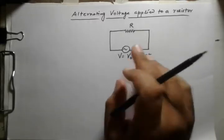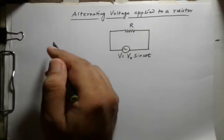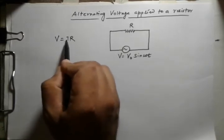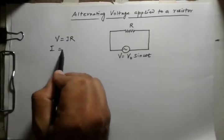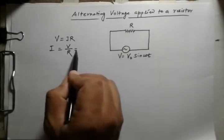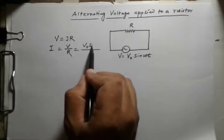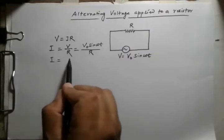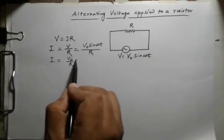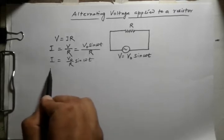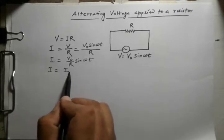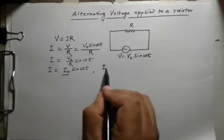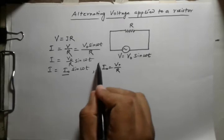From this AC source we find out the current using Ohm's law: V is equal to i times R, so i is equal to V by R. That gives us i equal to V₀ sine omega t divided by R, or i equal to i₀ sine omega t, where i₀ is equal to V₀ by R. This i₀ is the peak value.